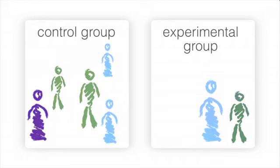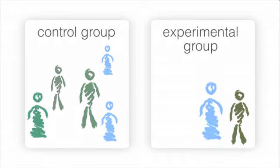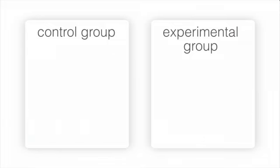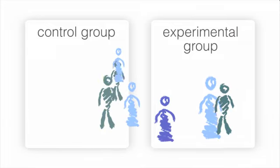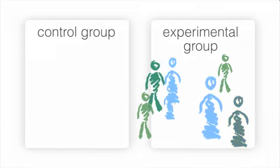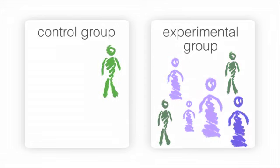If people were able to choose which group they were in, it is possible that the groups would start out being very different from each other before the study even began. For example, if volunteers were given the choice, they might prefer the experimental treatment or the standard treatment based on their family history or their prior experience.